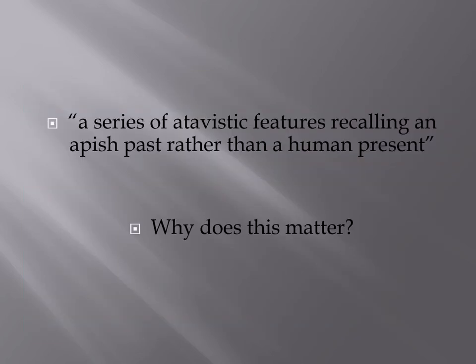From Lombroso's own writings, he described 'a series of atavistic features recalling an apish past rather than a human present.' He tried to create a measurement system to determine the degree of facial prognathism and other atavistic features — bumps on the back of the skull, skull width, and similar traits — to prove that based on these measurements someone is most likely going to be a criminal, and further that those people are not as evolved as non-criminals.